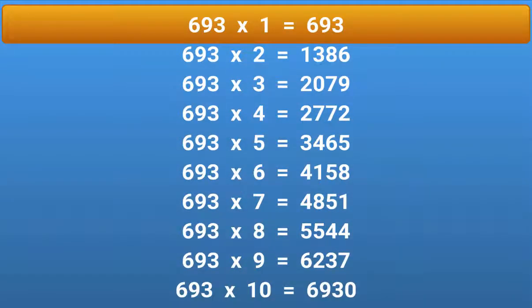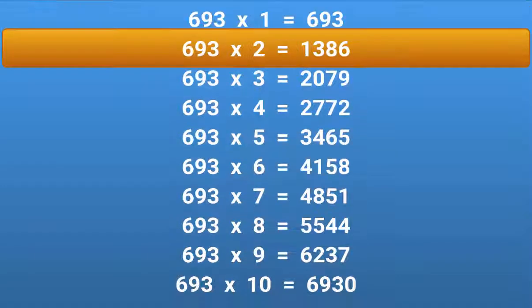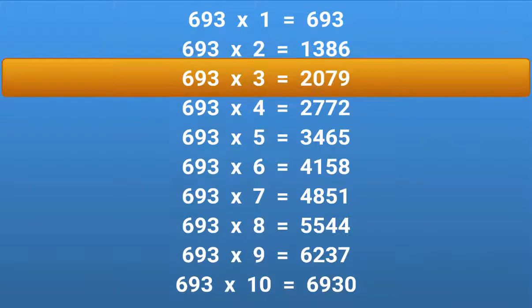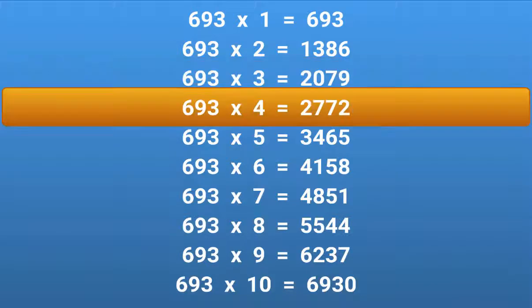693 × 1 = 693. 693 × 2 = 1386. 693 × 3 = 2079. 693 × 4 = 2772.